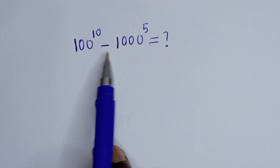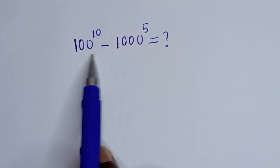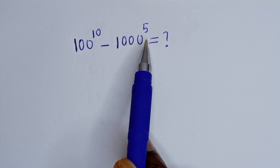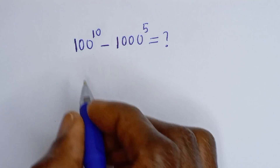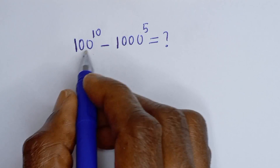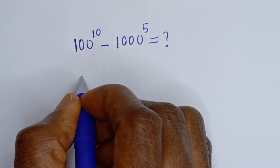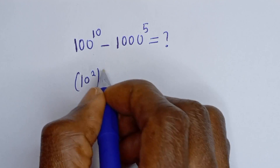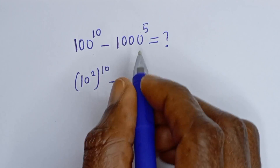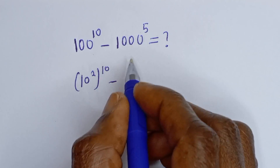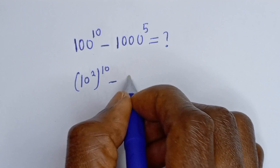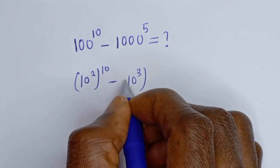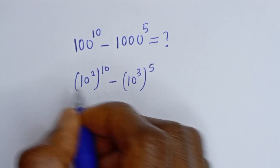How to simplify this math problem: 100 to the power of 10, minus 1000 to the power of 5. 100 to the power of 10 can be written as 10 squared to the power of 10, minus 1000 to the power of 5, which can be written as 10 to the power of 3, to the power of 5.